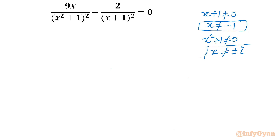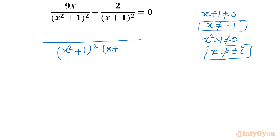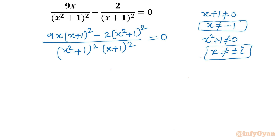So these solutions we will exempt. Let us simplify first by taking LCM. The LCM is (x² + 1)² times (x + 1)². So the numerator becomes 9x times (x + 1)² minus 2(x² + 1)², and this equals 0.